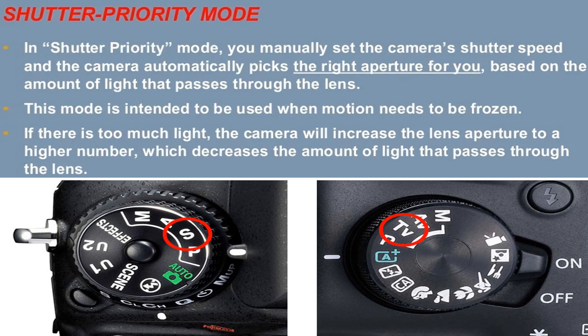In Shutter Priority mode, you manually set the camera's shutter speed and the camera automatically picks the right aperture based on the amount of light that passes through the lens. This mode is intended for use when motion needs to be frozen. If there is too much light, the camera will increase the lens aperture to a higher f-number, decreasing the amount of light that passes through the lens.